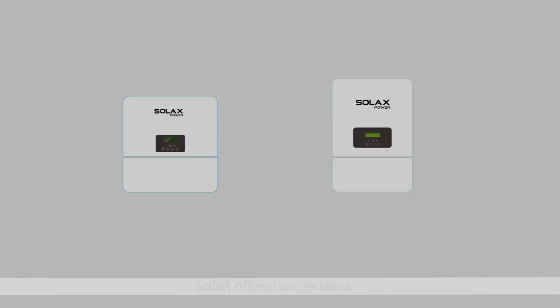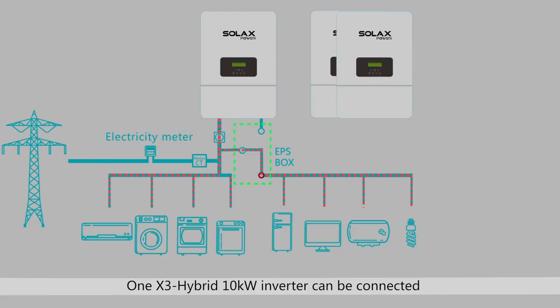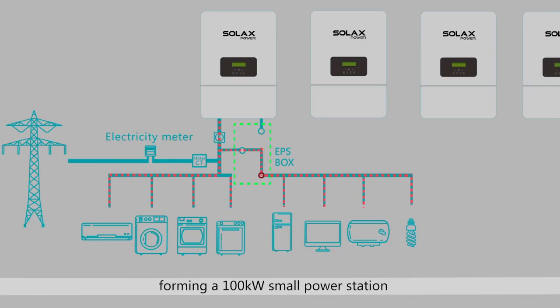SolarX offers two versions of High Voltage Hybrid Inverter: X1 Hybrid Single Phase and X3 Hybrid Three Phase Inverter. One X3 Hybrid 10-kilowatt inverter can be connected with up to 10 X3 Hybrid 10-kilowatt inverters, forming a 100-kilowatt small power station.